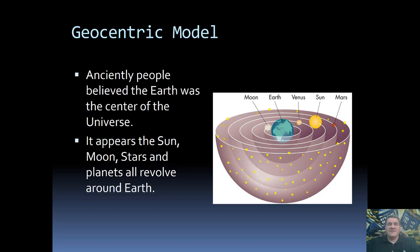For example, anciently people believed that the Earth was the center of the universe. That the Sun, Moon, all the planets, and everything actually orbit around the Earth. That the Earth was the center. Now, to be fair, I can kind of understand where they're coming from.